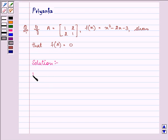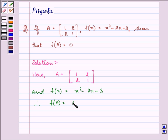Solution: Here we have the matrix A as 1, 2, 2, 1 having its elements and f(x) is equal to x squared minus 2x minus 3. Therefore, we have f(A) as A squared minus 2A minus 3I.